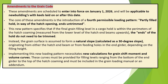Amendments to the Grain Code are scheduled to enter into force on January 1, 2026, and will be applicable to new buildings with keels laid on or after that date. The core of these amendments is the introduction of a fourth permissible loading pattern: partly filled hold in way of the hatch opening, ends untrimmed. This new pattern specifies that if the final grain filling level in a cargo hold is within the perimeters of the hatch combing, the ends of the hold do not need to be trimmed. Instead, the grain surface is assumed to form a natural slope, calculated as a 30-degree slope, originating from either the hatch end beam or from feeding holes in the end girder, depending on the filling height. Implementing this new loading pattern necessitates new calculations for grain shift moment and volume curves, provided for filling levels ranging from the bottom of the end girder to the top of the hatch combing, to be included in the grain loading manual or an addendum.